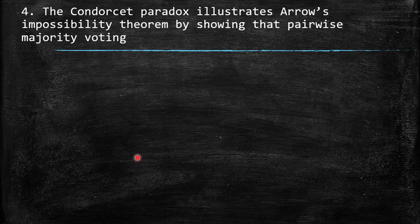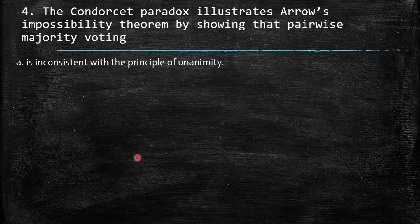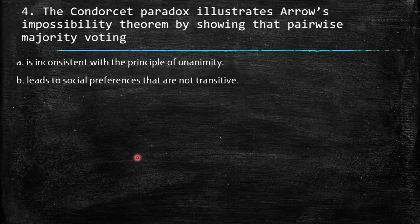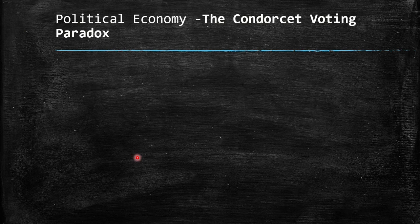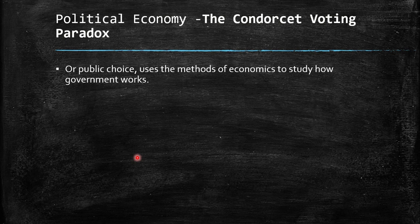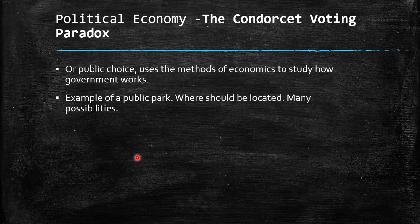Fourth: the Condorcet paradox illustrates Arrow's impossibility theorem by showing that pairwise majority voting leads to social preferences that are not transitive, violates the independence of irrelevant alternatives, or makes one person in effect a dictator. I want to explain the Condorcet voting paradox. This is based on public choice — the branch of economics that uses tools to understand how government works and how the population decides.